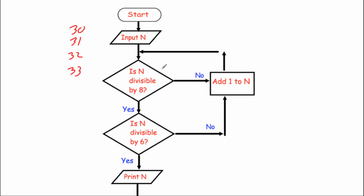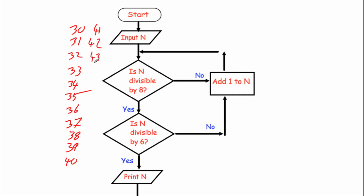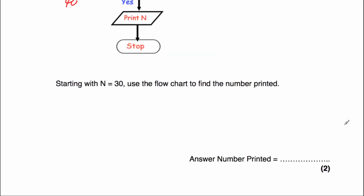Is 33 divisible by 8? No — so we keep adding one: 34, 35, 36, 37, 38, 39 — none are divisible by 8. Then 40. Is 40 divisible by 8? Yes. Is it divisible by 6? No — add one: 41. We keep going: 42, 43, 44, 45, 46, 47 — not divisible by 8. Then 48. Is 48 divisible by 8? Yes. Is it divisible by 6? Yes. So we print N. The answer is 48.